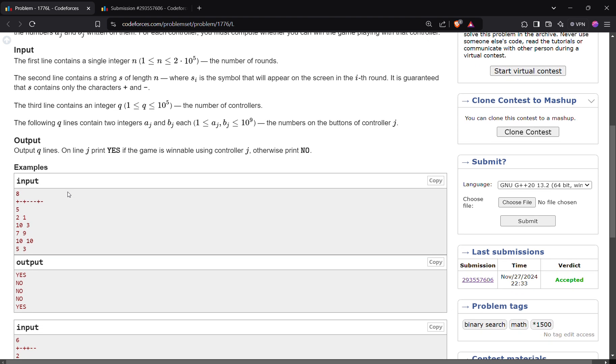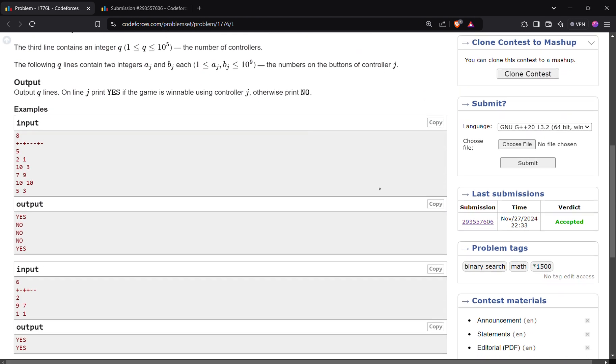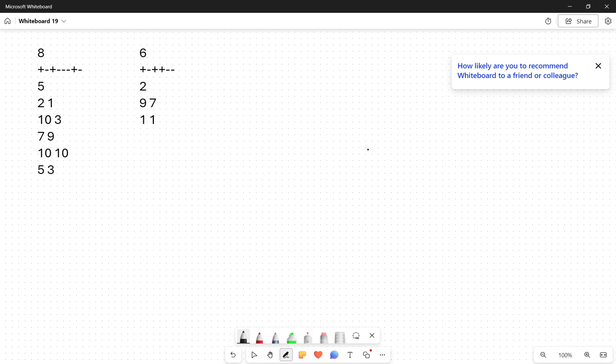We have to check for each query if the first button contains this first number and second button contains the second number, is it possible to make score 0 after n rounds. This is a question which involves some mathematical computations, defining some variables and playing around with them to conclude some inequalities or properties.